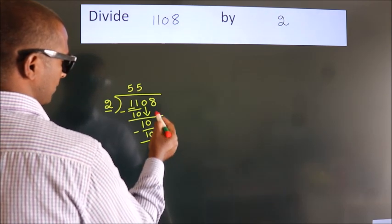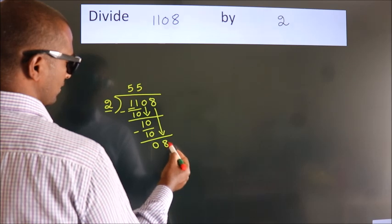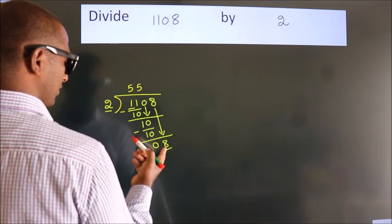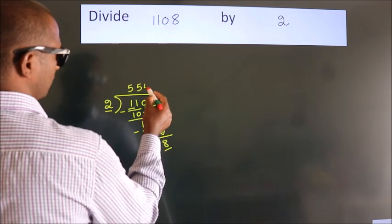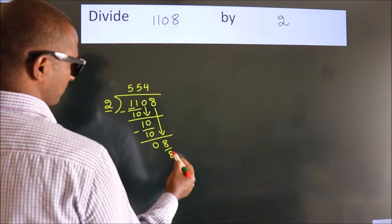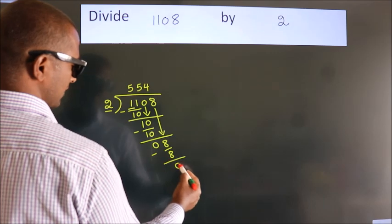After this, bring down the beside number. 8 down, so 8. When do we get 8? In the 2 table, 2 fours, 8. Now we subtract. We get 0.